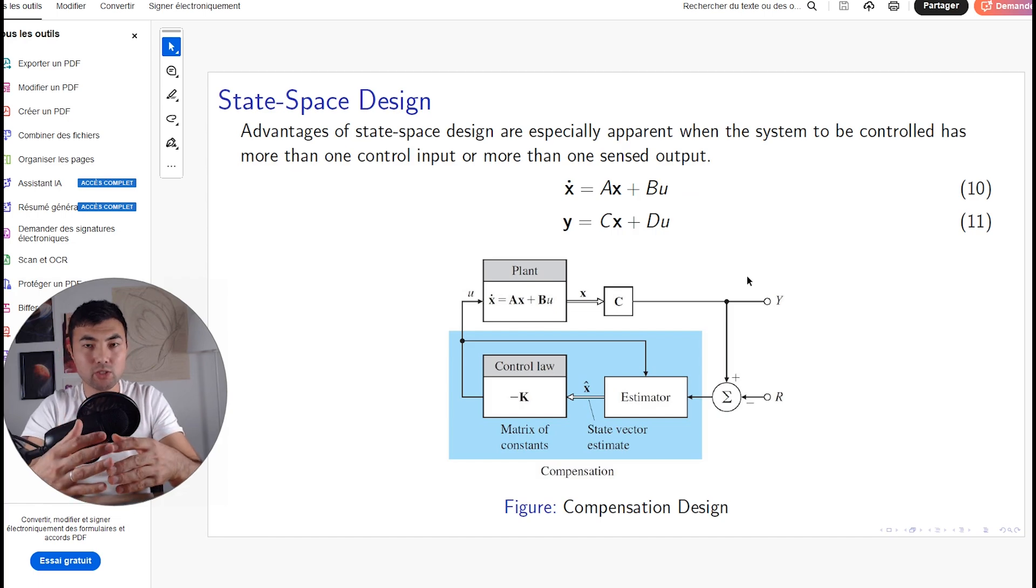LQR allows us to combine all these variables into a single control signal. So every variable is multiplied by a gain, and the sum of these multiplications...